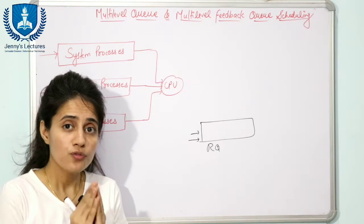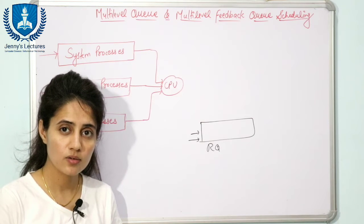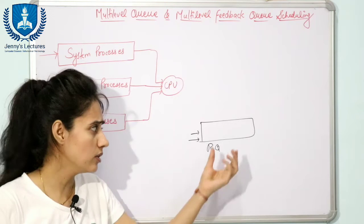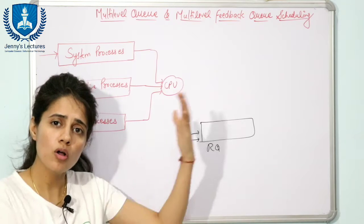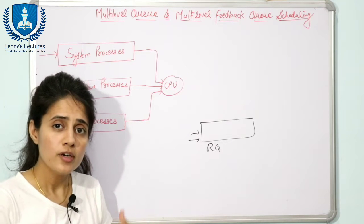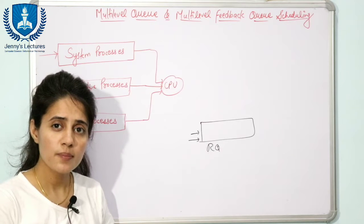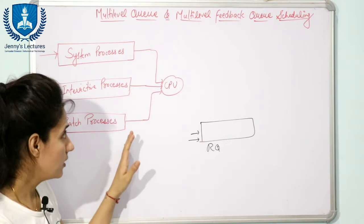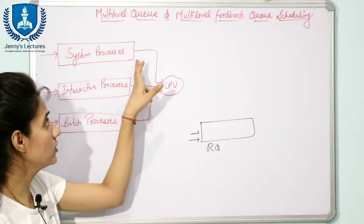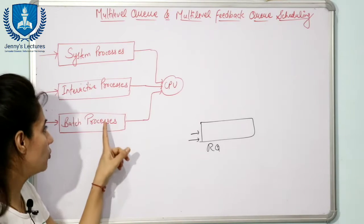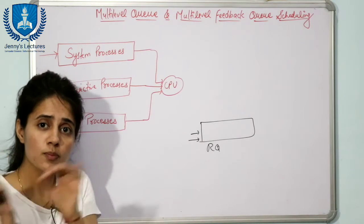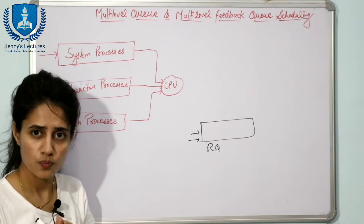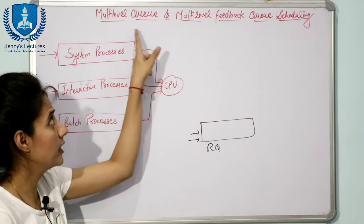We have different types of processes running on our computer, and each process has its own scheduling needs. So why put all processes in one ready queue and apply the same scheduling to all of them? Why not divide the ready queue into separate queues? This is the main idea of multi-level queue scheduling. For example, suppose we have three queues: one for system processes, one for interactive processes, and one for batch processes.